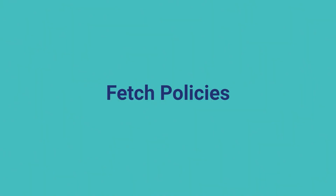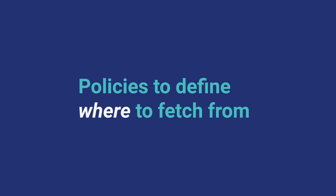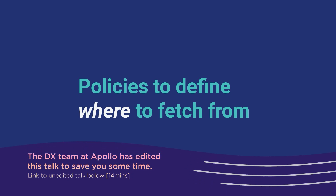Getting the data — where does it come from? How do we know how to get it? That's where fetch policies come into play. They tell us where to get it — is it coming from the cache? Is it coming from the network? Is it a combination of the two? And these can solve a lot of problems for you.